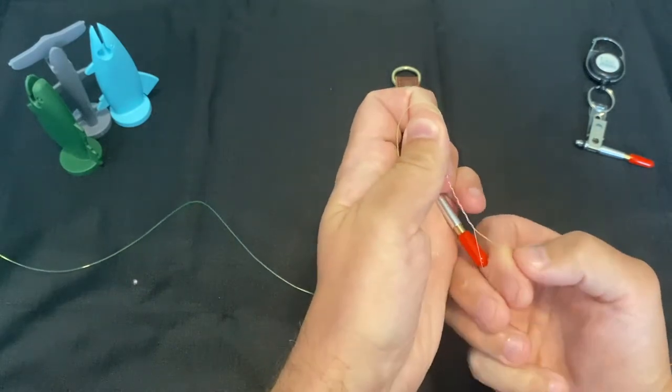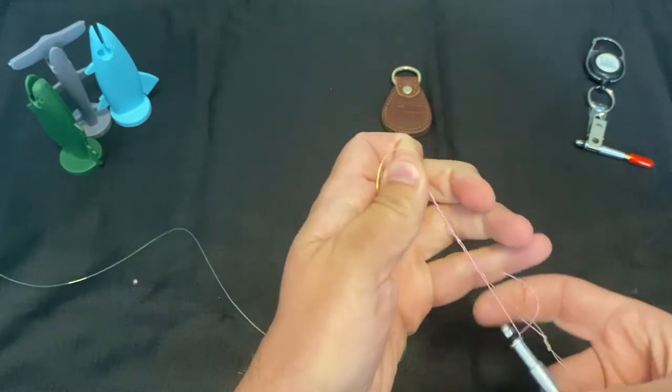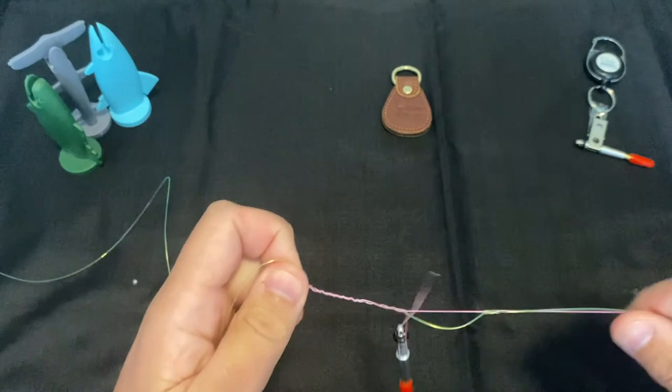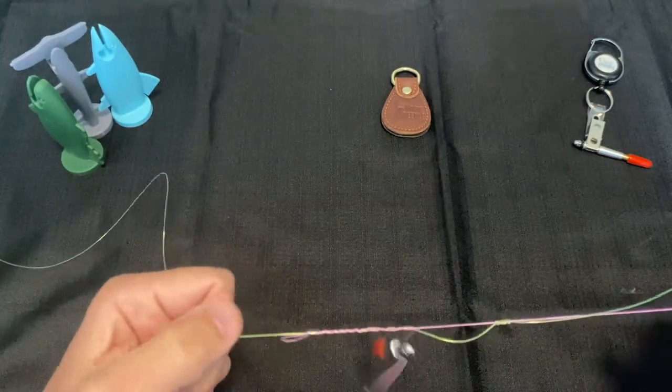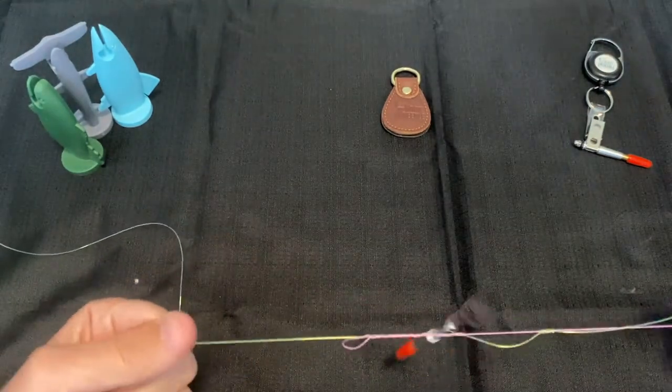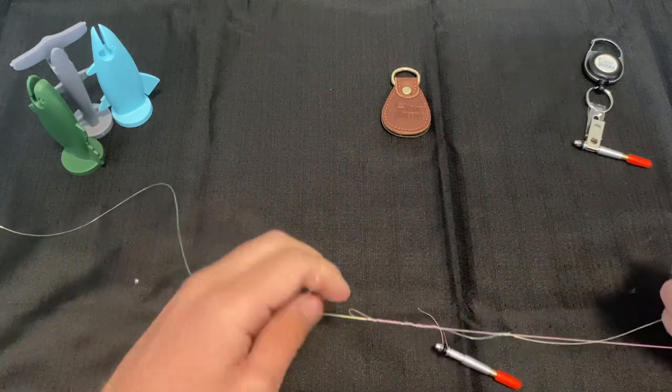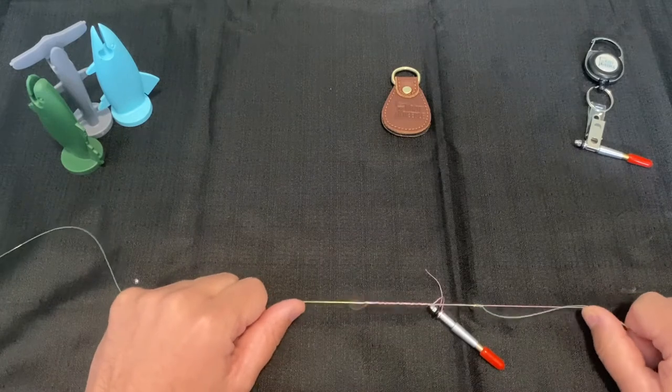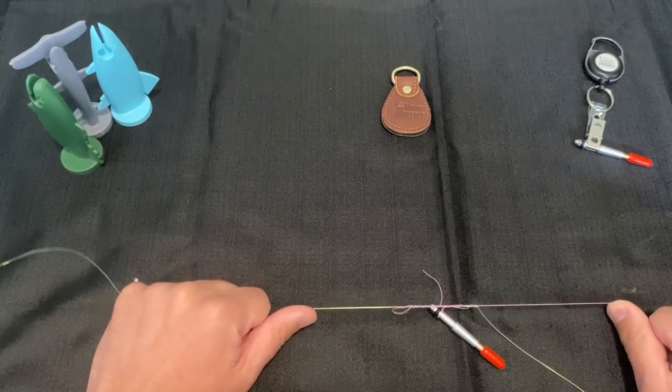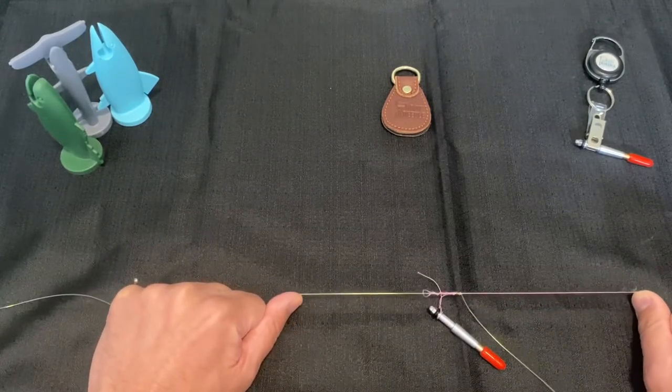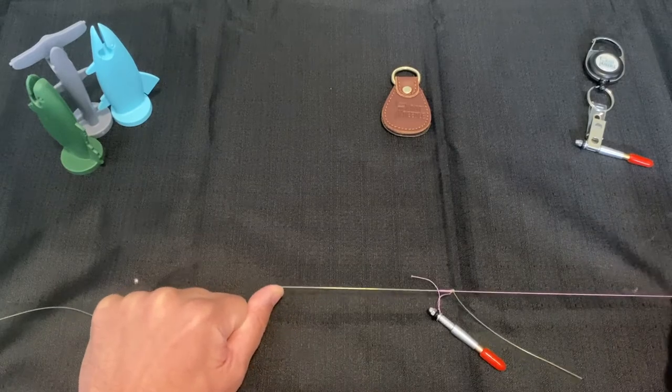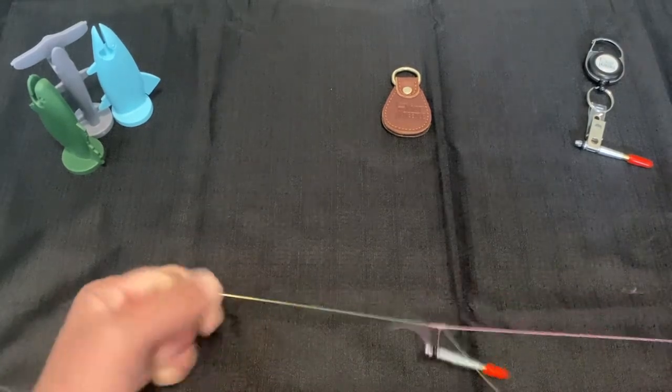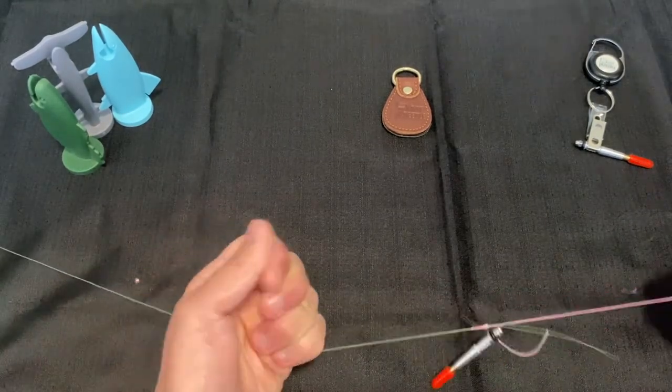Then take the knot needle and thread it through the loop. Let it hang like this. Now let go, grab the braided line and your mono, wet your line here, and then pull them apart. It should create a very smooth knot.